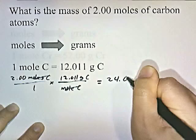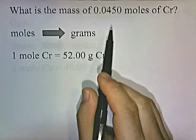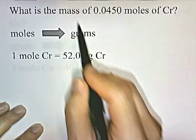This is a rounded answer, not the exact answer. Let's do another similar problem: what is the mass of 0.045 moles of chromium? Again, we're given moles of chromium and they're asking for mass or grams. If you look on the periodic chart, chromium is about 52 grams — I think it's 51.99.